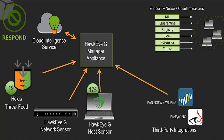Different from other platforms, our technology allows you to do manual actions directly on one, many, or all endpoints: kill running processes, quarantine files, remove registry keys, block outbound network connections, execute forensic surveys, and execute further countermeasures. You can do all of that through the Hawkeye GUI regardless of where that endpoint is located — you don't need to log into the endpoint or have credentials on it. The Hawkeye GUI with the host sensor handles it.